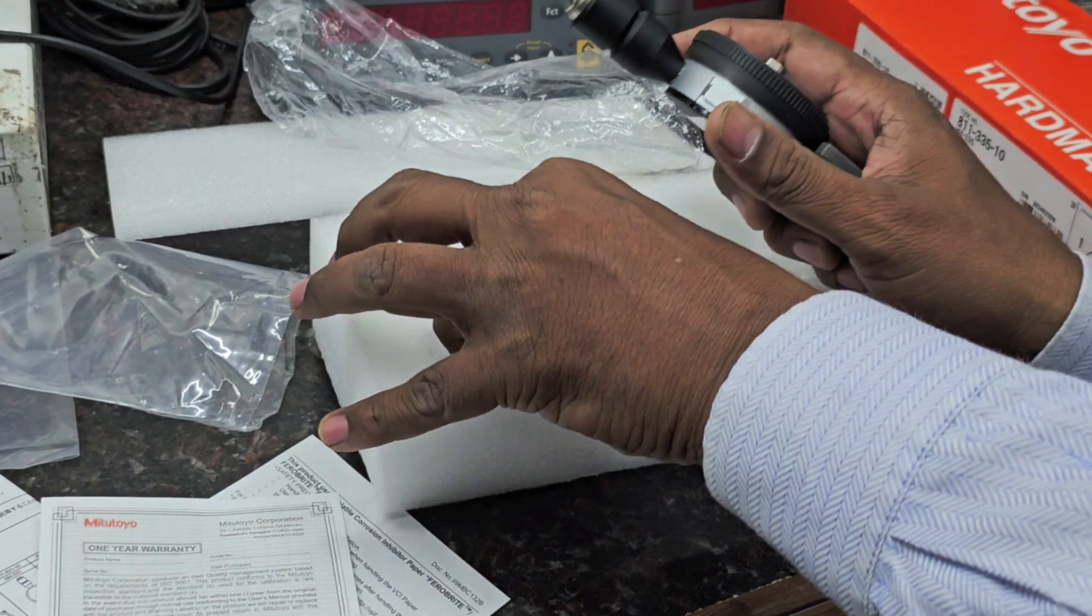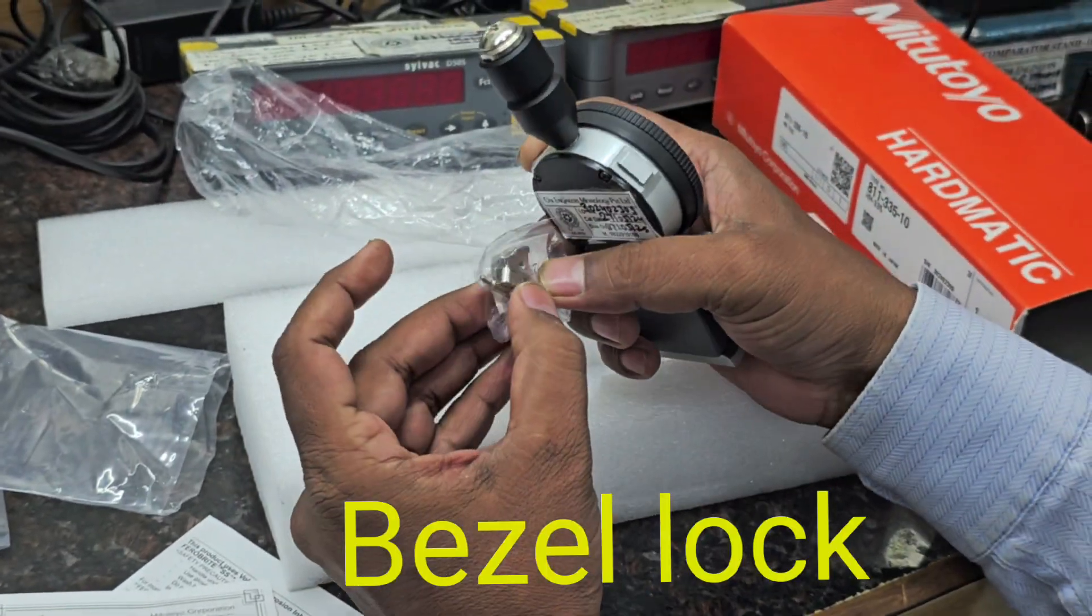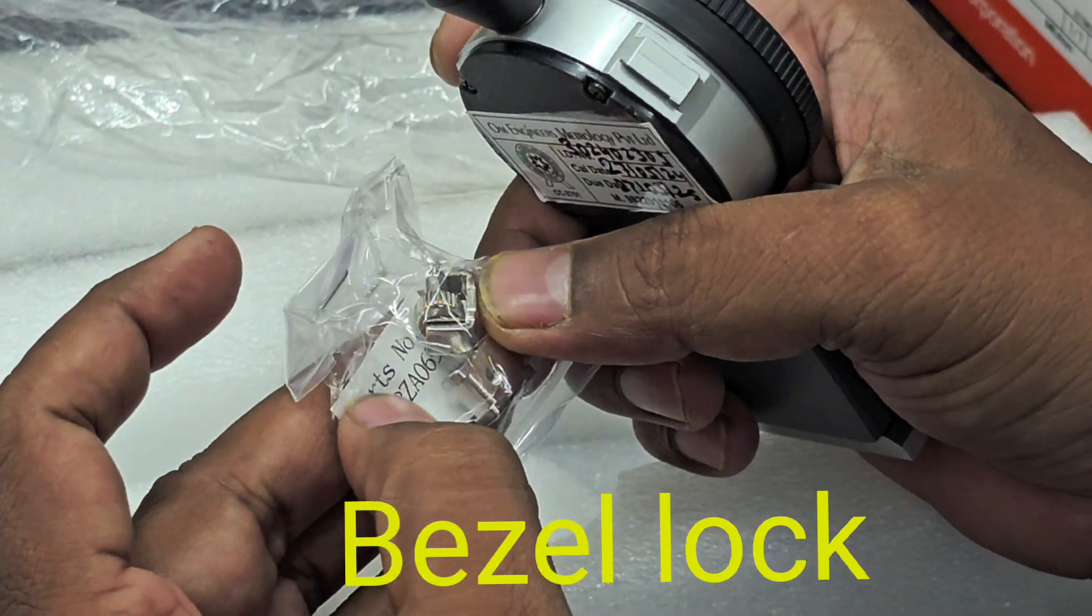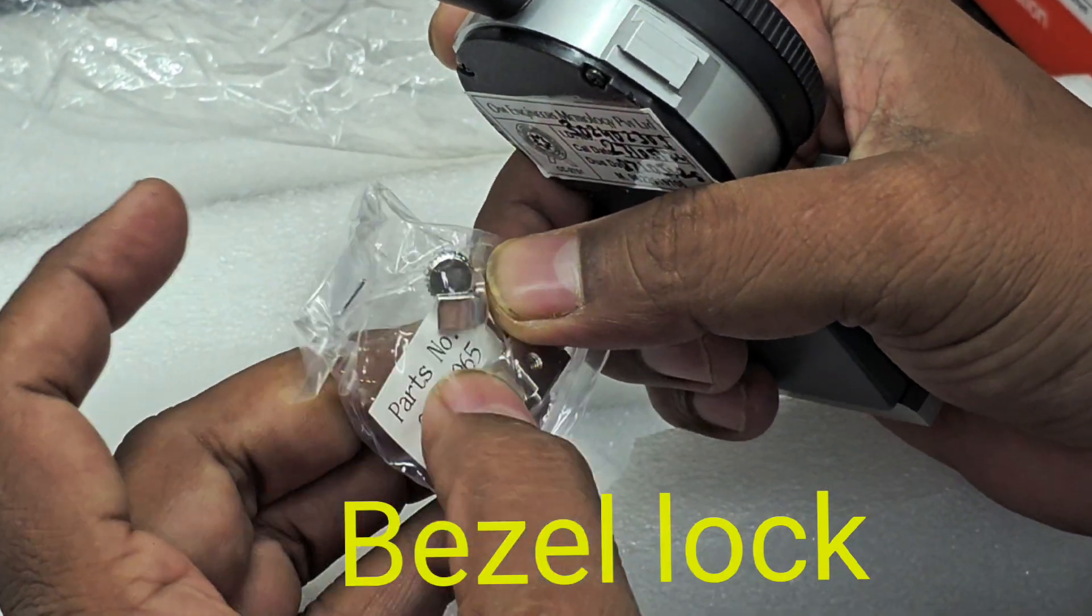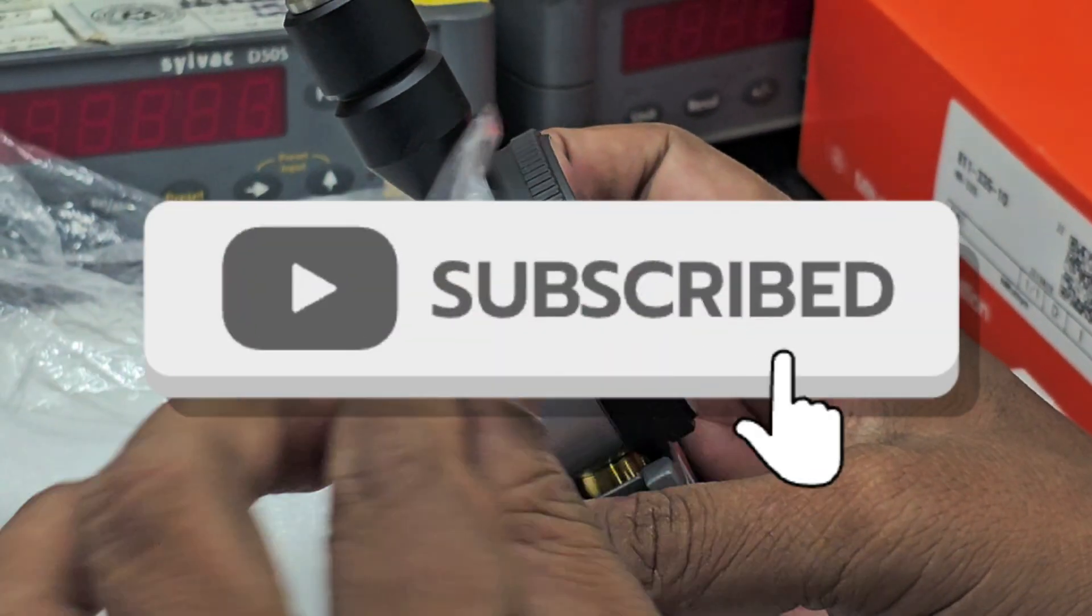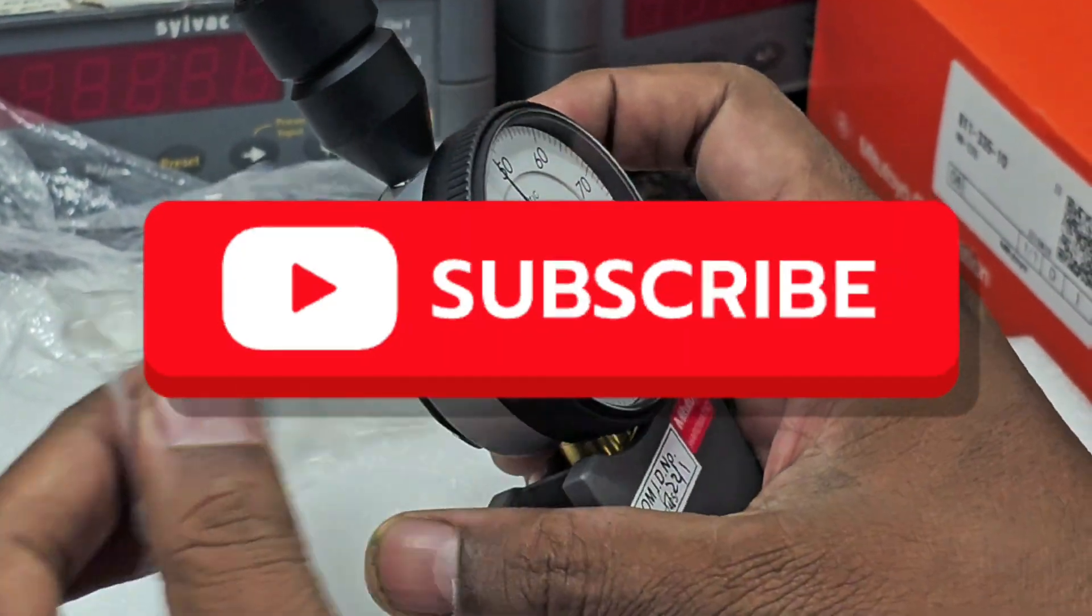Inside this part, the code number is 21RZA-065. This is the bezel lock assembly supplied by Mitutoyo.